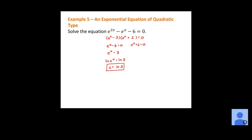For e to the x plus 2 equals 0: subtract 2 to get e to the x equals negative 2. Remember, the graph of e to the x is always positive — e to some power will never equal a negative value, so there is no solution. If you keep going and take the natural log of both sides, you'd end up with natural log of negative 2, and we can't take the log of a negative value. So our only solution is x equals the natural log of 3.